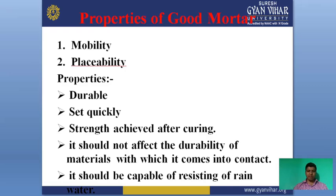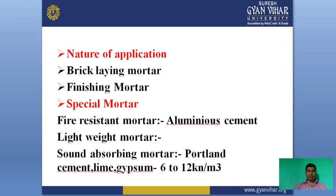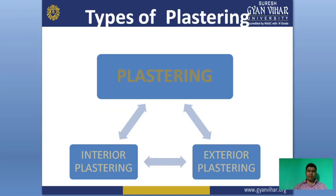There are two types of plaster: interior plaster and exterior plaster. Interior plaster means plastering done inside the wall of our house, and exterior plaster is on the outer surface. Interior plaster can be defined as a smooth finish with a thickness of 6mm to 12mm, mainly applied inside apartments for various purposes. This figure shows the interior plaster of any house.